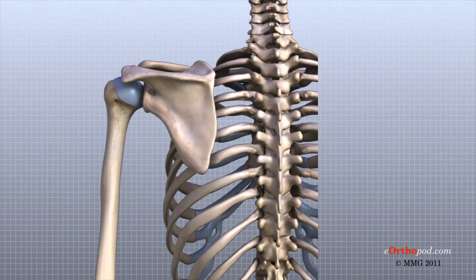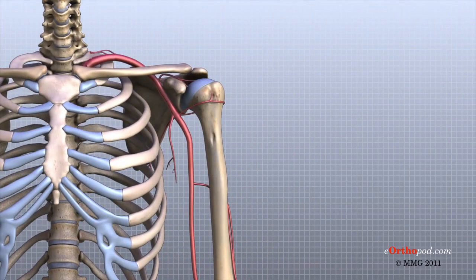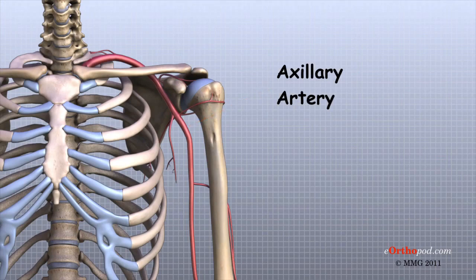Traveling along with the nerves are the large vessels that supply the arm with blood. The large axillary artery travels through the axilla. If you place your hand in your armpit, you may be able to feel the pulsing of this large artery. The axillary artery has many smaller branches that supply blood to different parts of the shoulder. The shoulder has a very rich blood supply.